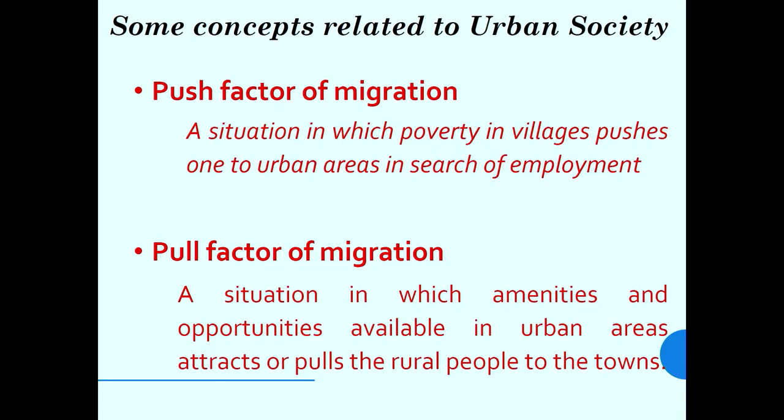There are different concepts related to urban society. Due to migration, people migrate from their own areas to cities. Push factor migration is a situation in which poverty and conditions in the village push one to urban areas in search of employment. The pull factor is a situation in which amenities and opportunities available in urban areas attract rural people to towns — better education systems, better medical systems, and more job prospects. Therefore, people try to migrate from their own areas to urban areas so that they can have their livelihood.